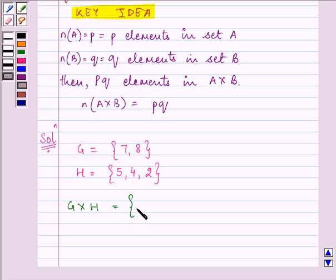we will be writing the ordered pairs such that the first element belongs to G and the second element belongs to set H. So here the answer will be (7,5), (7,4), (7,2).